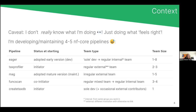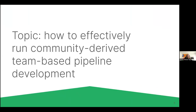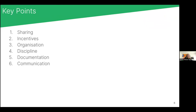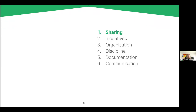Some of these teams have regular meetings once a week, others have people coming in and out every now and then. That's the background from which I've gathered this experience. I want to talk about how to effectively run community-derived, team-based pipeline development. From my thoughts, I've split this into six main key points: sharing, incentives, organization, discipline, documentation, and communication.